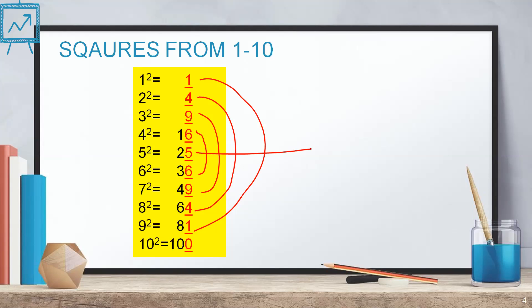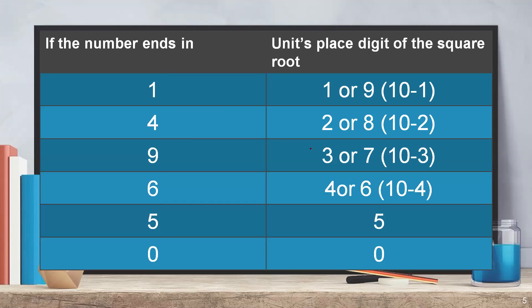Here is a clue — the first step of finding the square root of perfect squares: if your question is ending with 1, your answer will end either with 1 or with 9. Remember, 9 is 10 minus 1. If your question ends with 4, the answer will end with 2 or 8. If it ends with 9, the answer ends with 3 or 7. If it ends with 6, the answer ends with 4 or 6. If it ends with 5, the answer ends with 5. If it ends with 0, the answer ends with 0.